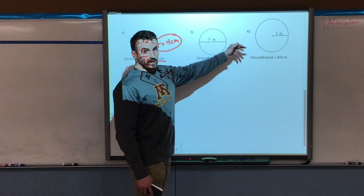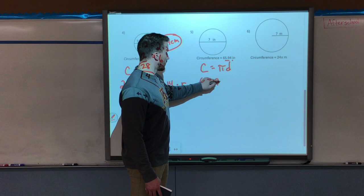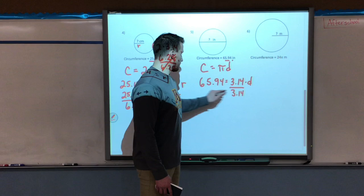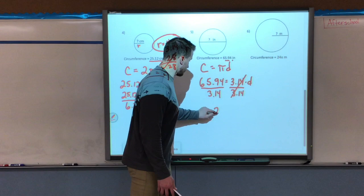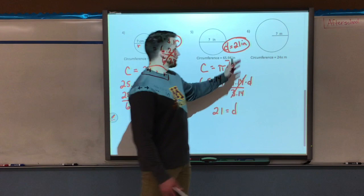That's all we're doing. Example 5: they want a diameter. So I'm going to use circumference equals pi times diameter. I know my circumference, so I replace C with 65.94 equals 3.14 times d, my diameter, which I don't know. Work backwards, divide by pi. Divide my circumference by pi to find the diameter. If I take 65.94 divide that by pi, using my calculator, I get my diameter length of 21. So my diameter is 21 inches.